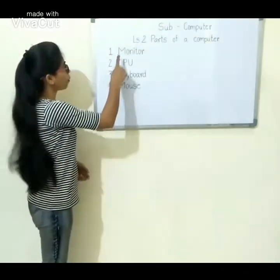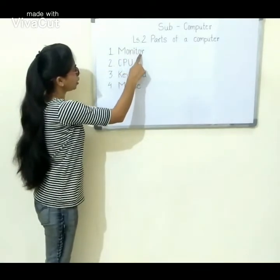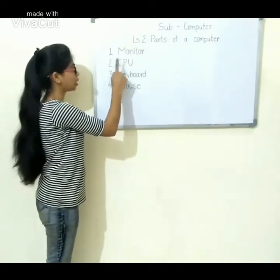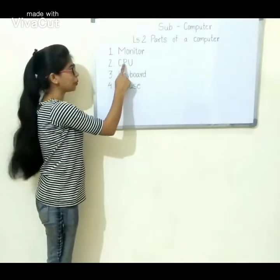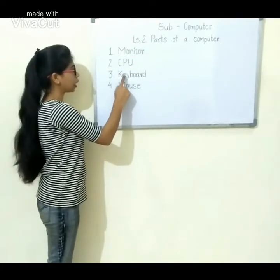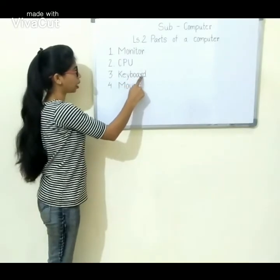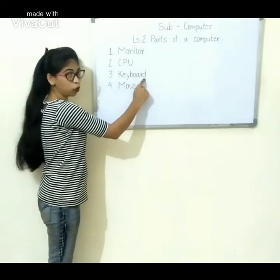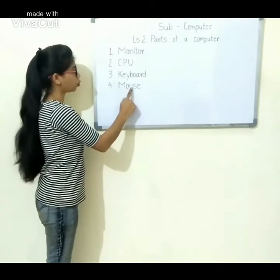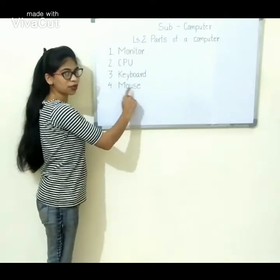First is Monitor. Second is CPU. Third is Keyboard. Fourth is Mouse.